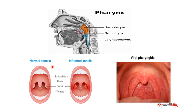In this diagram I want to show you the difference between normal tonsils and inflamed tonsils, because during pharyngitis the tonsils can sometimes be inflamed. These small structures are the normal tonsils, but during pharyngitis you can see the inflammation of the tonsils. For now, ignore the white spots, as those appear in bacterial pharyngitis, which we will discuss in the next video.